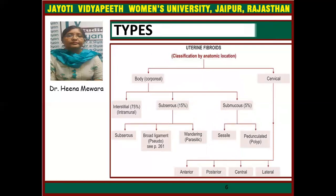The types of fibroid are classified by anatomical location. There are two types: body fibroid and cervical fibroid. Body fibroids are further divided into three parts depending on the layer of the uterus involved.